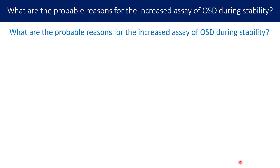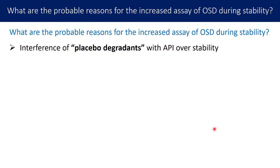Now let us discuss the probable reasons for increased assay of oral solid dosage form during stability. The first probable reason is interference of placebo degradants with the API. If excipients generate degradation products due to incompatibility with the API or other excipients, these placebo degradants interfere with API quantitation, giving higher assay values. As these degradants increase over time during stability, the assay shows an incremental increase.